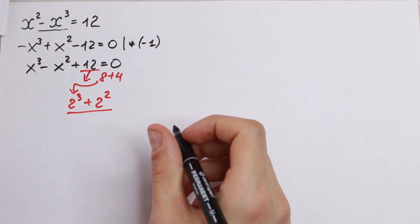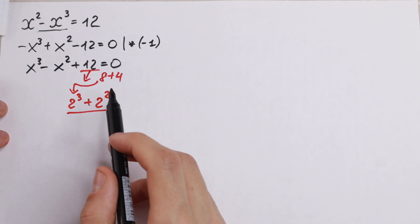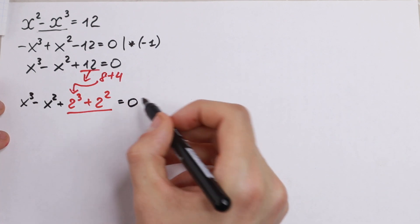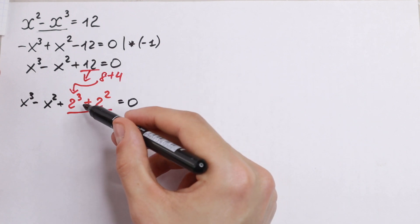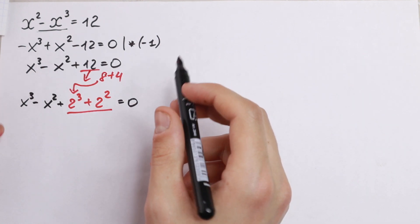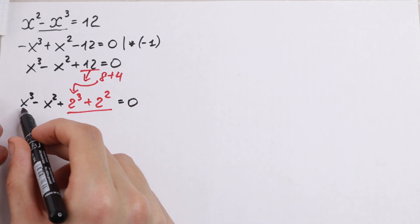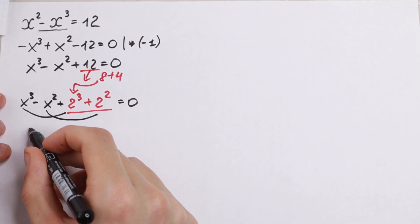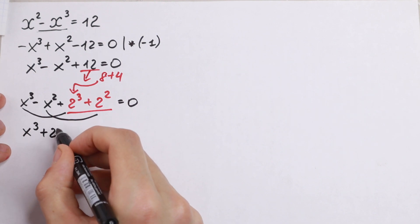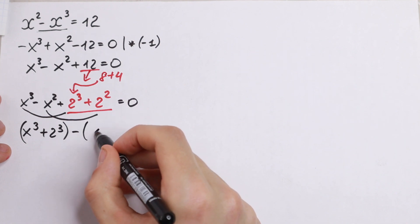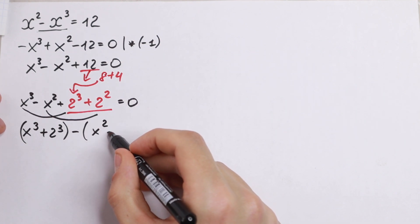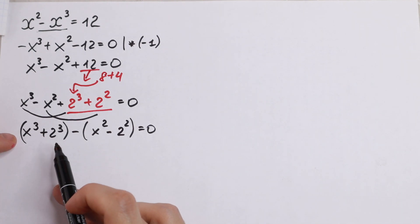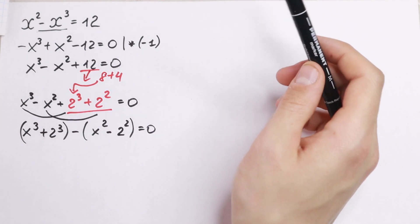So we now write: x cubed minus x squared plus 2 cubed plus 2 squared equal to 0 — I just replaced 12 with 2 cubed plus 2 squared. If we group x cubed with 2 cubed, and x squared with 2 squared, we get: (x cubed plus 2 cubed) minus (x squared minus 2 squared) equal to 0. If we expand the parentheses and simplify, we get back to the same expression as before — nothing has changed.